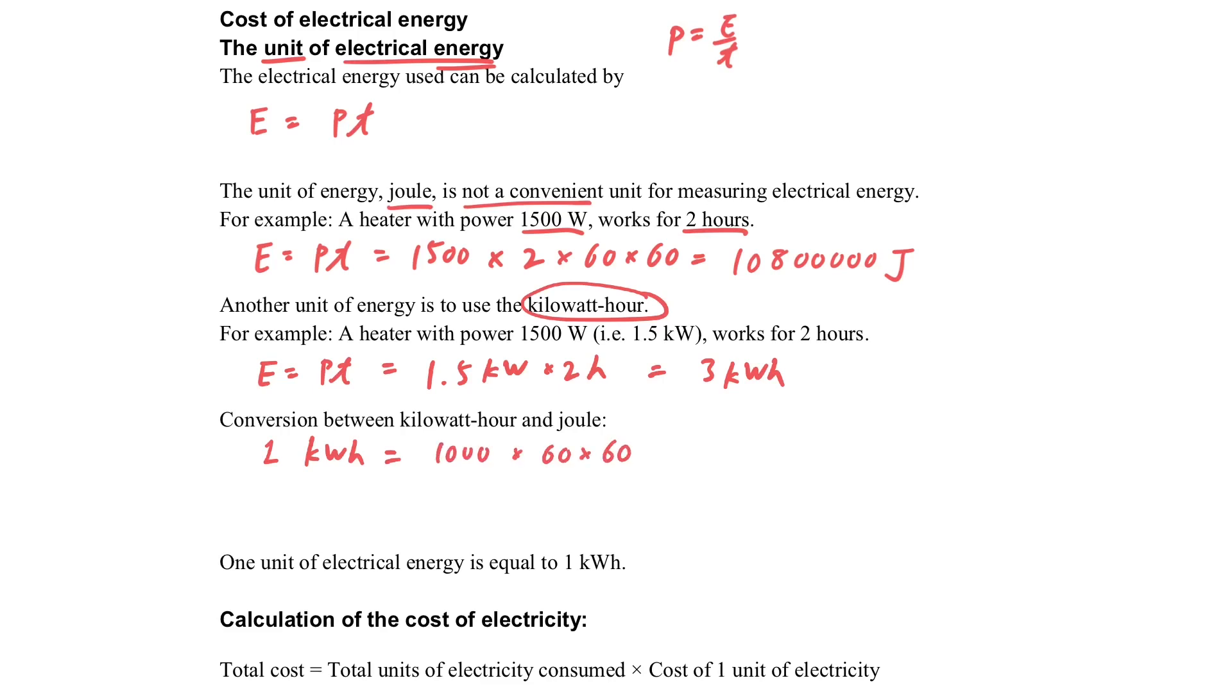Here is the conversion between kilowatt-hour and joules. By multiplying 1000 watts with 3600 seconds, we can get joules. To change it back to kilowatt-hour, it's one over that number.